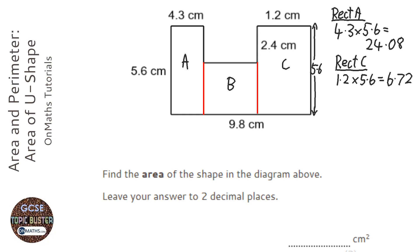Rectangle B is quite difficult because I don't actually have any of the lengths to it, either the width or the height. To work out the width, I know that the total width of this L-shape is 9.8, and the two bits I don't want are 4.3 and 1.2. So 9.8 take away 4.3 take away 1.2 leaves me with 4.3.